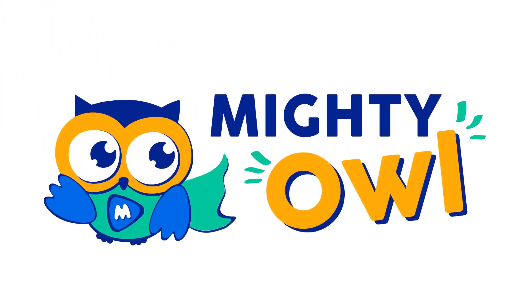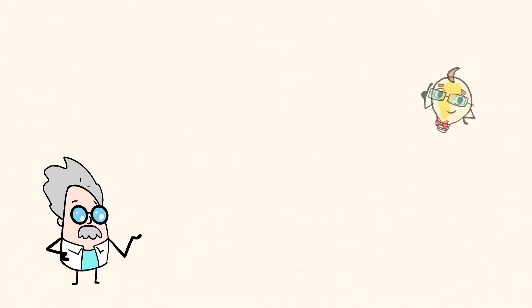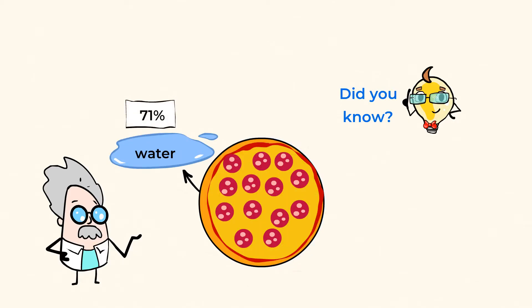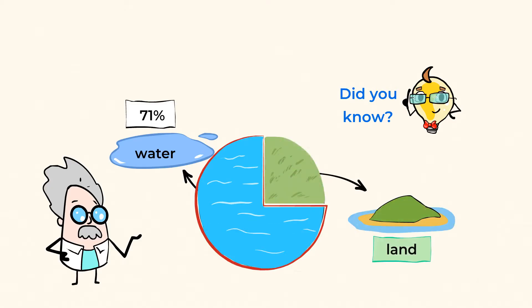Hello, this is Mighty Owl. Did you know most of our Earth is covered in water? Yeah, it's true. If our Earth was a pizza or a cake and you cut it into four pieces, three of those pieces would be water, and only one would be land.